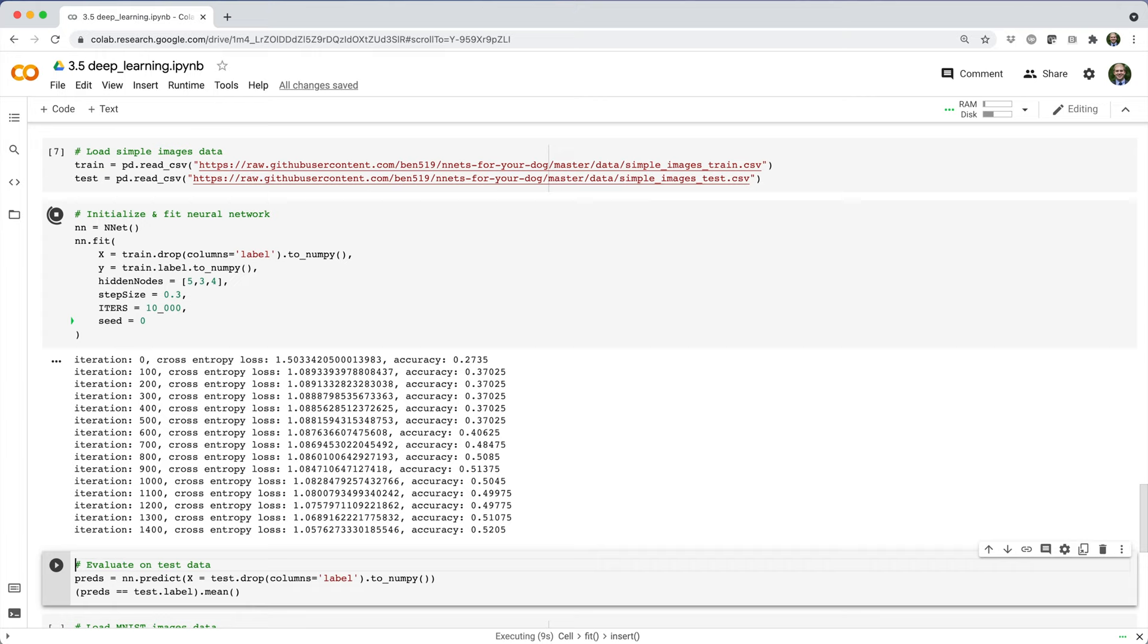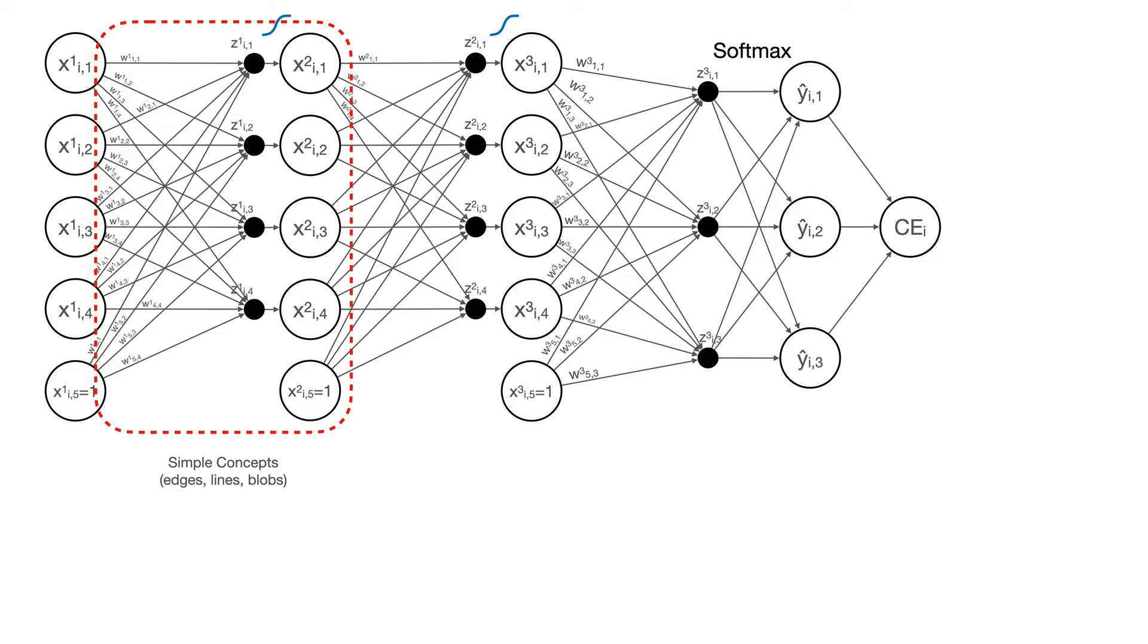In theory, using multiple hidden layers like this should allow the network to learn simple concepts in the first hidden layer, things like edges or lines or blobs, and then in the second layer,